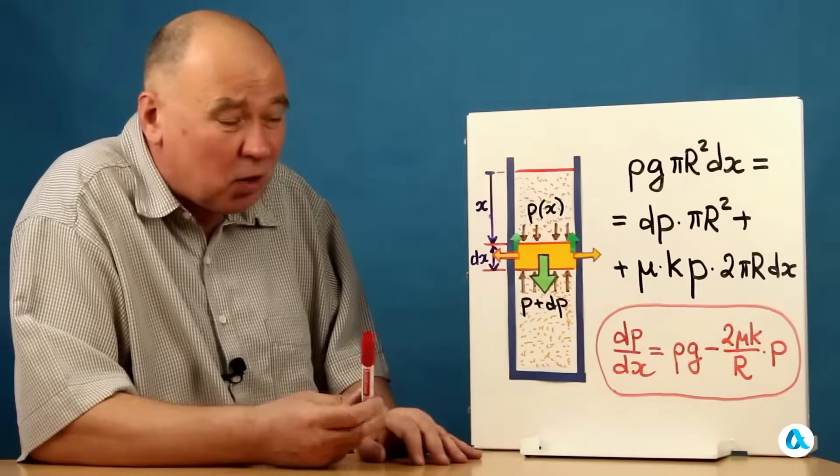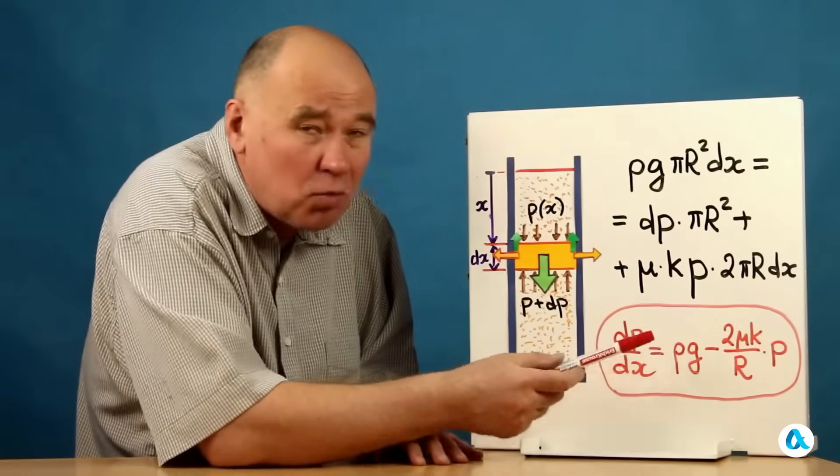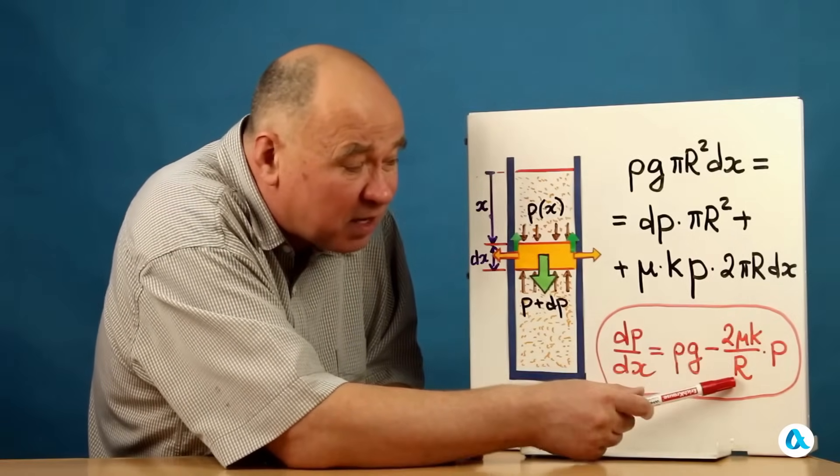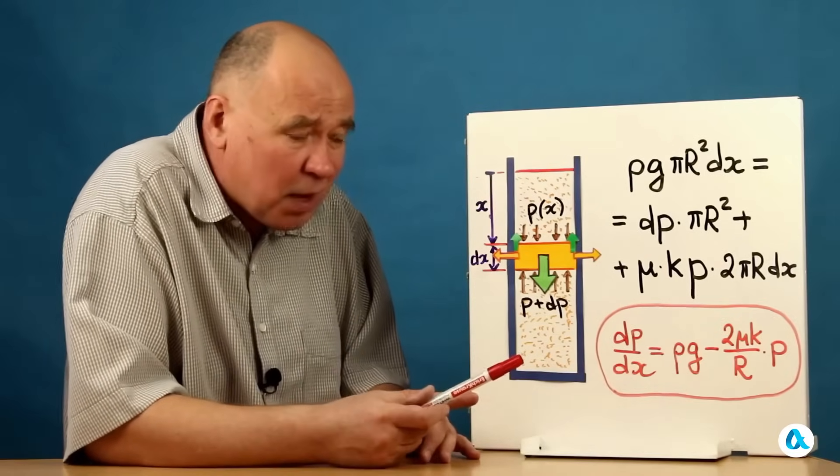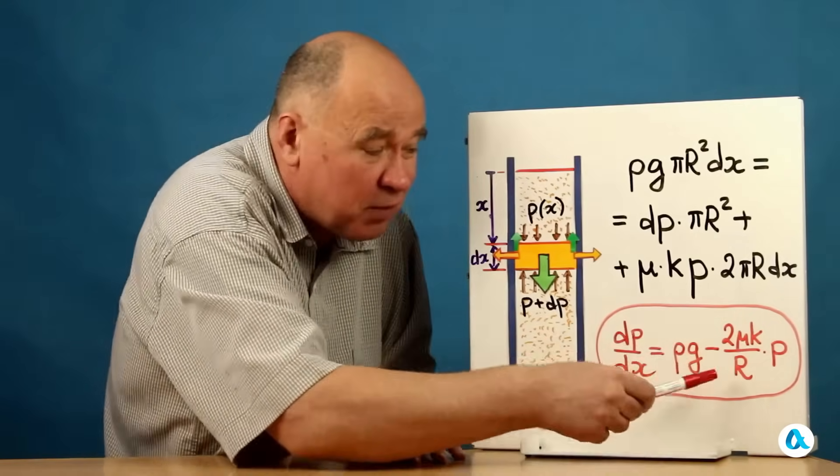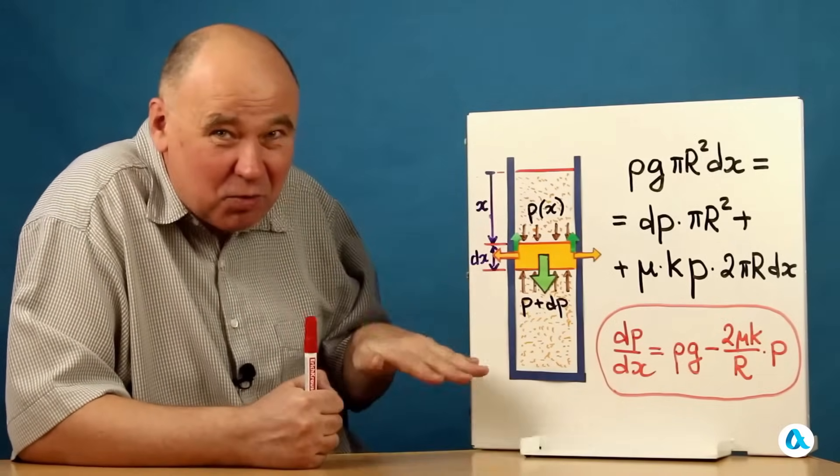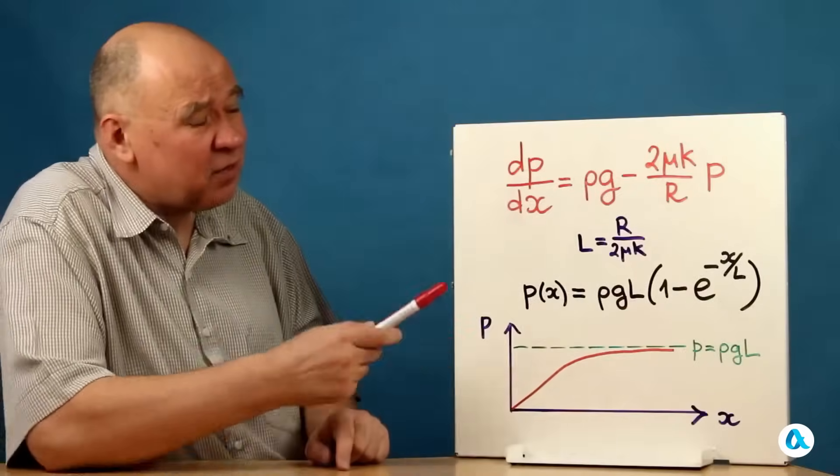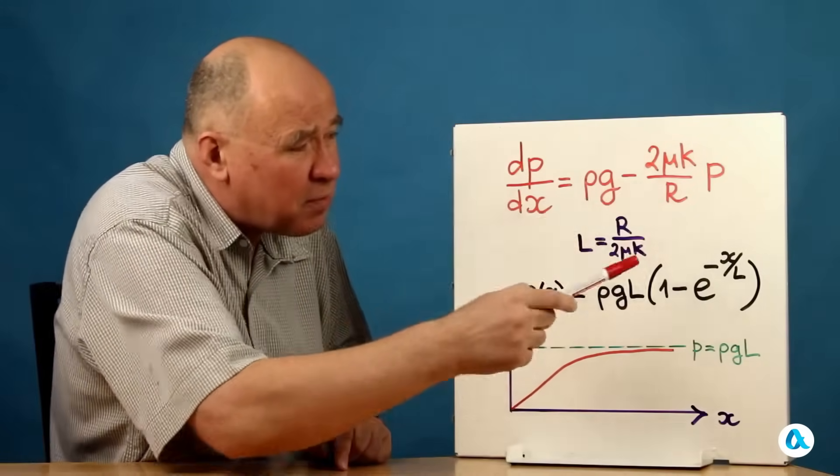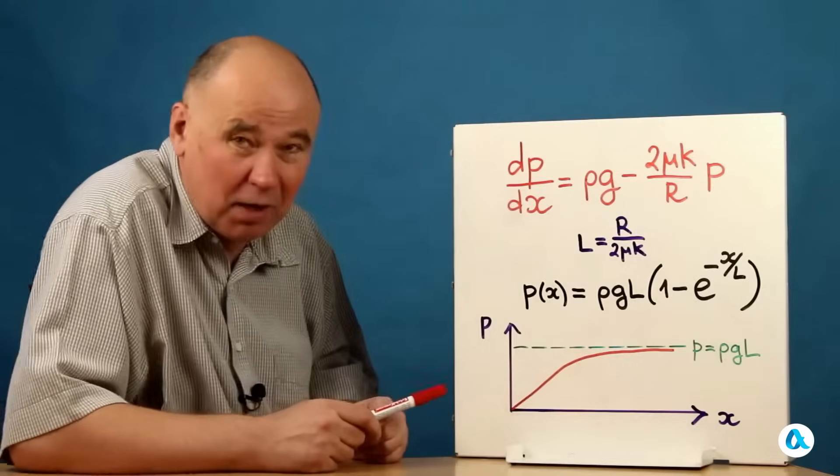And if we divide everything here by πr²dx, we will get this differential equation. dp/dx, first of all, the ρg is pure hydrostatics. And now comes the minus 2μk divided by r, multiplied by the pressure p itself. The second term has a negative sign. Well, the higher the pressure, the more we subtract from ρg here, and the slower the pressure increases with depth. And to write down the solution to this equation, it will be convenient for us to divide the quantity r by 2μk, and denote it with a single letter L. This is some length, since μ and k are dimensionless coefficients.